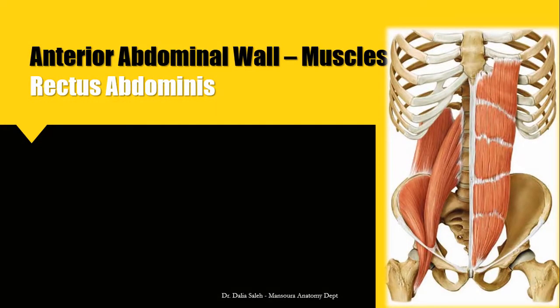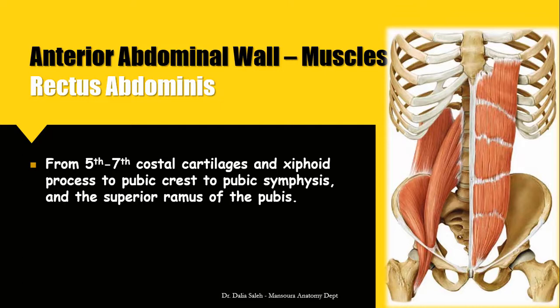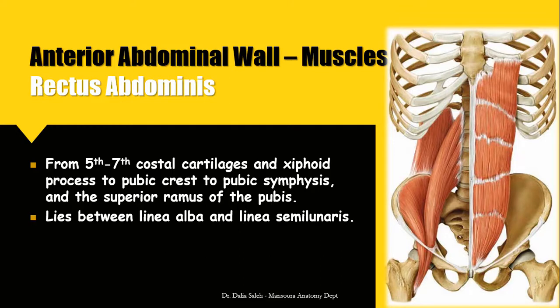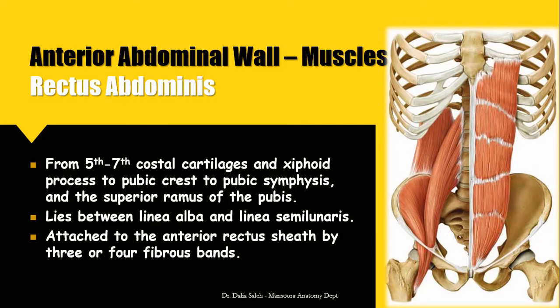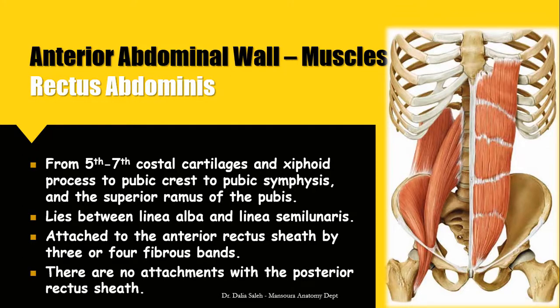The rectus abdominis muscle lies in the median region of the anterior abdominal wall within the rectus sheath. It is attached above to the fifth, sixth, and seventh costal cartilages and the xiphoid process, and below to the pubic crest, pubic symphysis, and the superior ramus of the pubis. It lies between the linea alba medially and the linea semilunaris laterally. The linea semilunaris is a curved line extending from the tip of the ninth costal cartilage to the pubic tubercle, denoting the lateral border of the muscle. The rectus abdominis is attached to the anterior rectus sheath by three to four tendinous intersections, while there is no attachment between the muscle and the posterior rectus sheath.